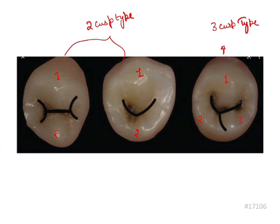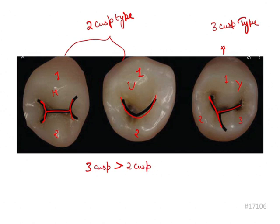The two-cusp types show two types of groove pattern: one simulates the H letter and another simulates the U letter. Then we have the Y pattern, which is seen in the three-cusp type. Interestingly, the three-cusp type is more common than the two-cusp type. Regarding incidence of groove patterns, Y is most commonly found, followed by U, and then H.